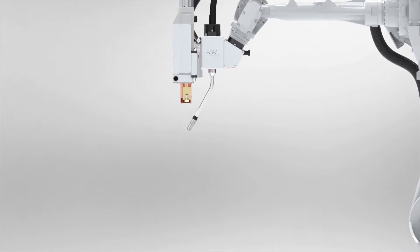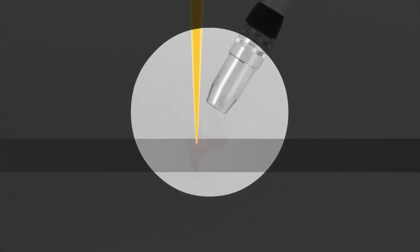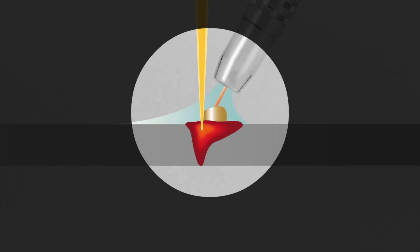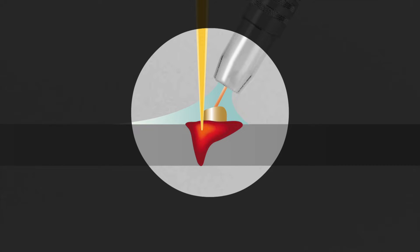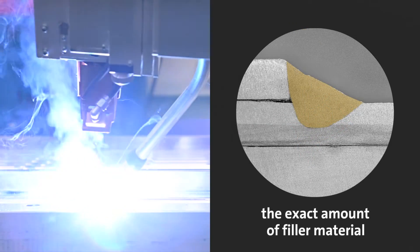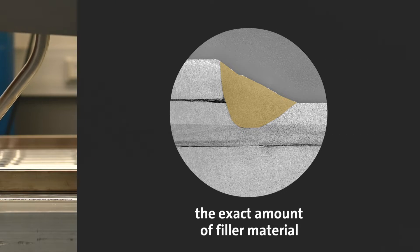In the Laser Hybrid process, the laser focuses its energy on a small area and thus generates a stable and process reliable penetration. At the same time, the exact amount of filler material is fed into the joining zone with the MiCMAC welding process.